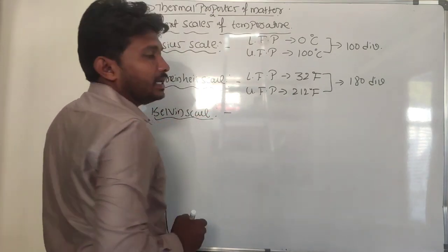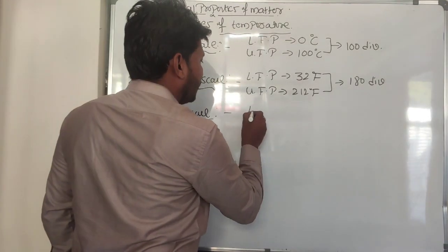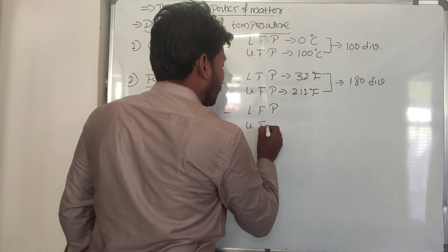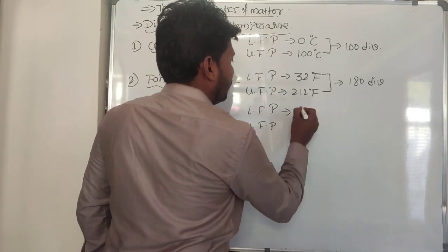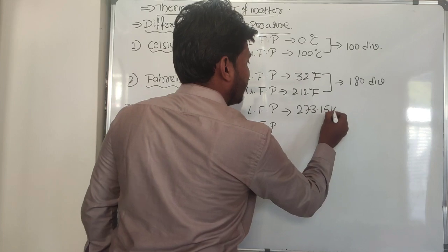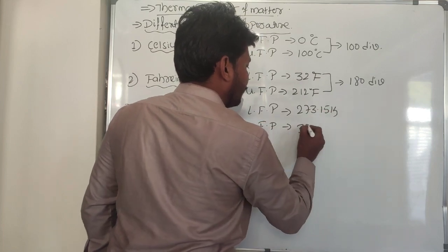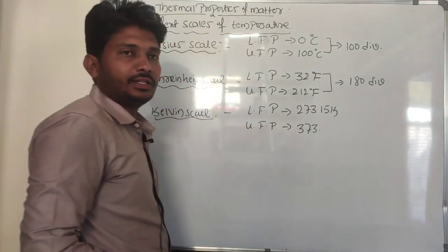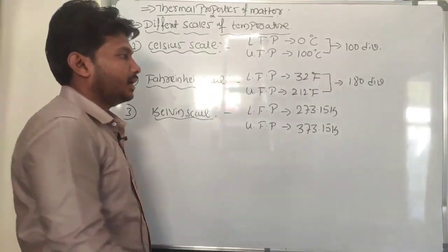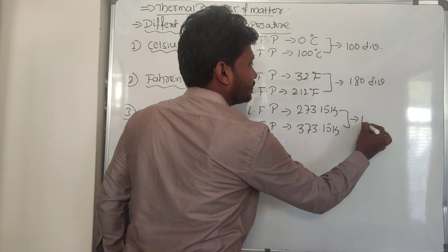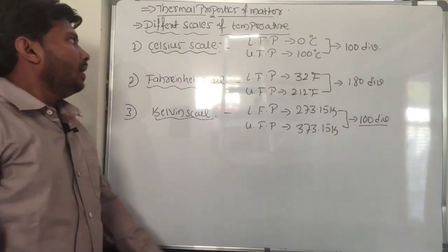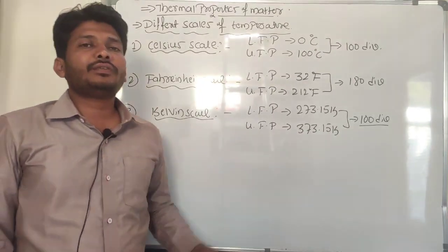In the case of the Kelvin scale, the lower fixed point value is 273.15 K and the upper fixed point is 373.15 K. The difference is again 100 divisions. Now, in order to convert temperature from one scale to another scale, we have a general formula.